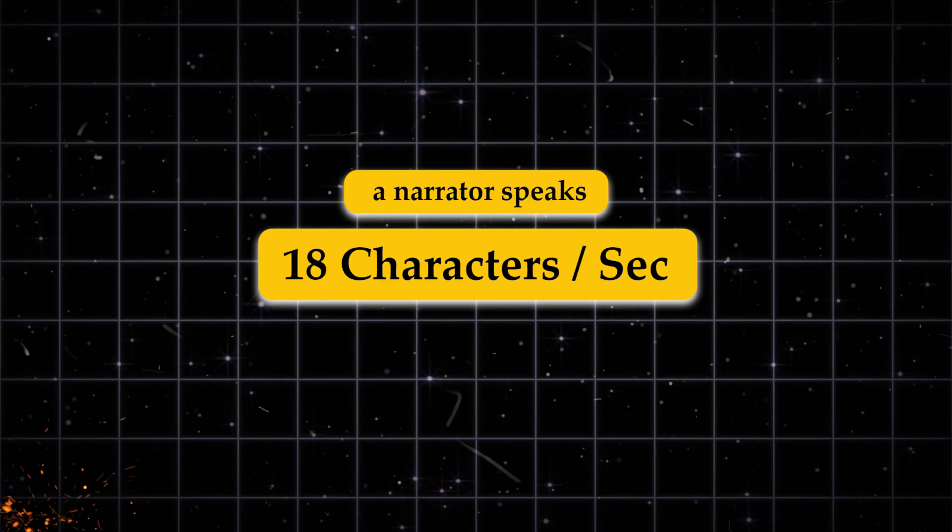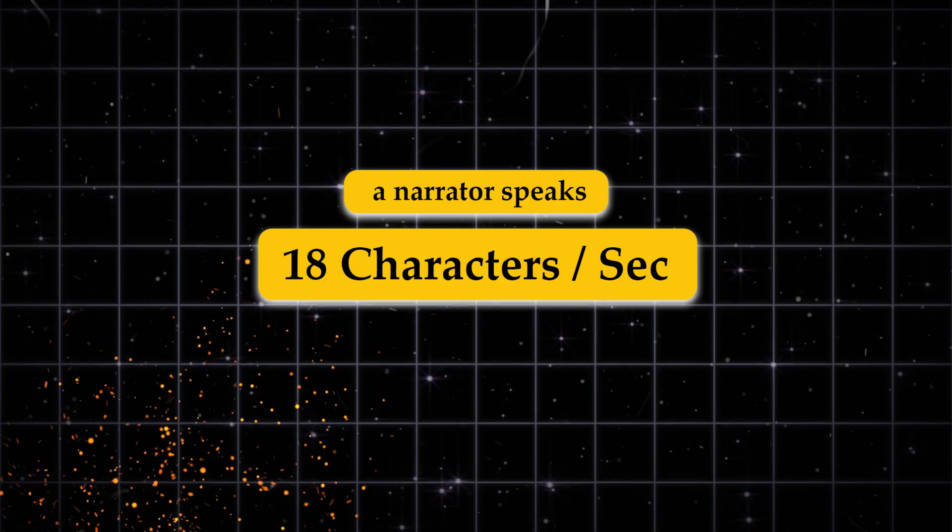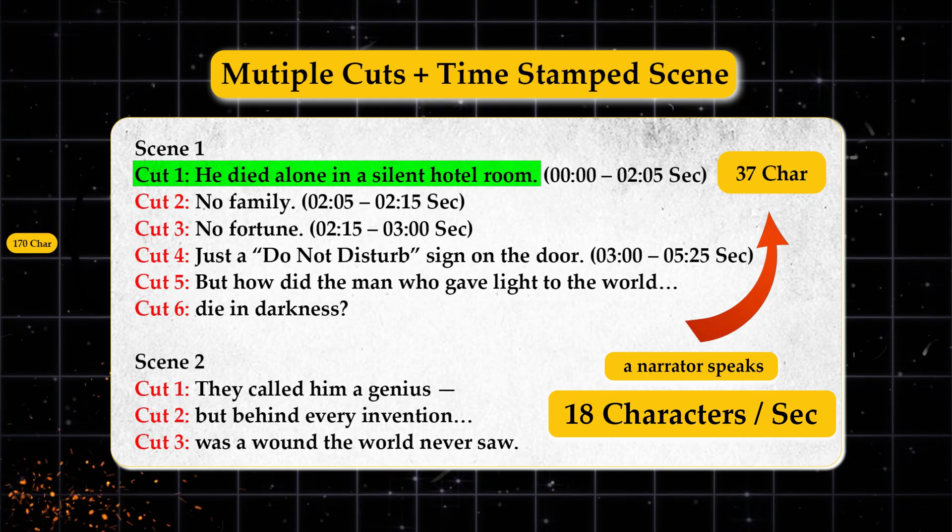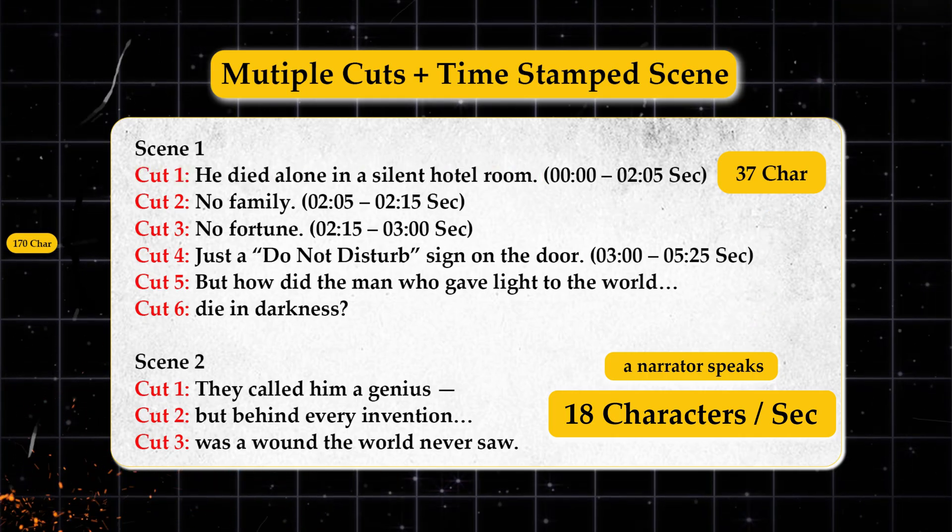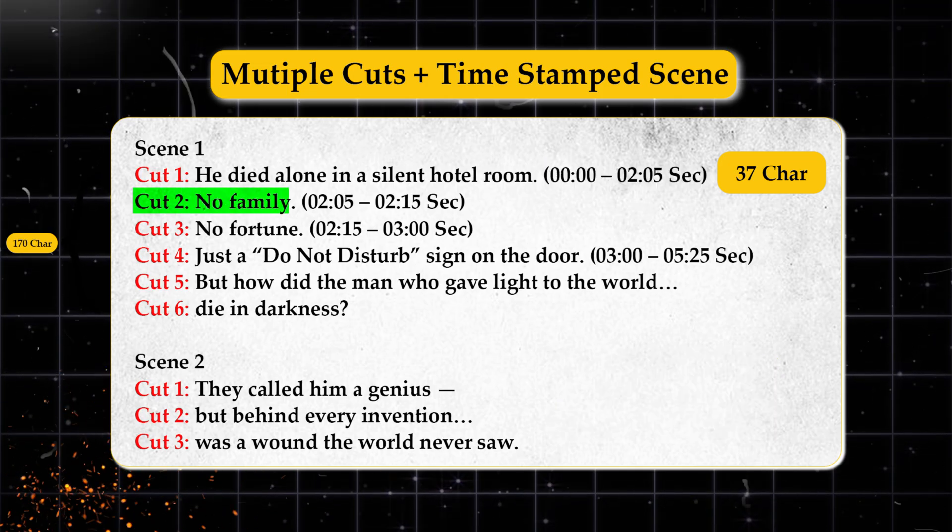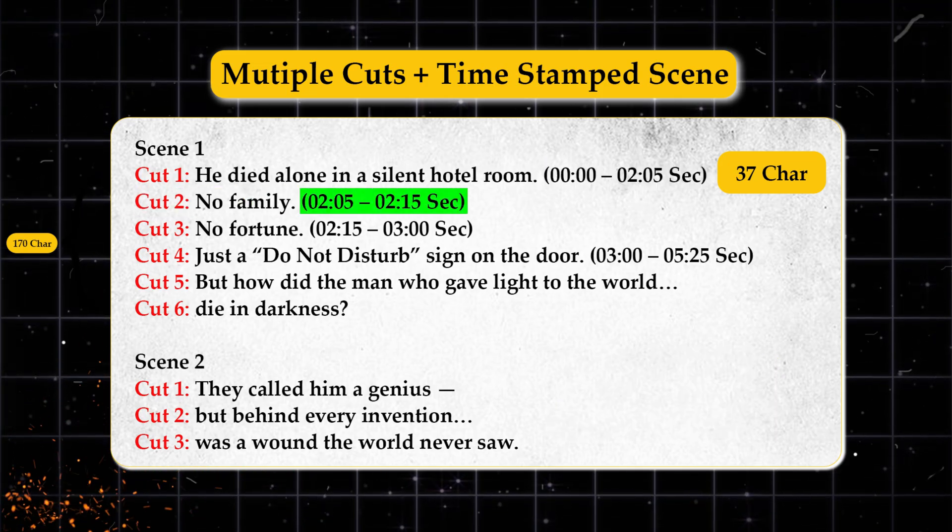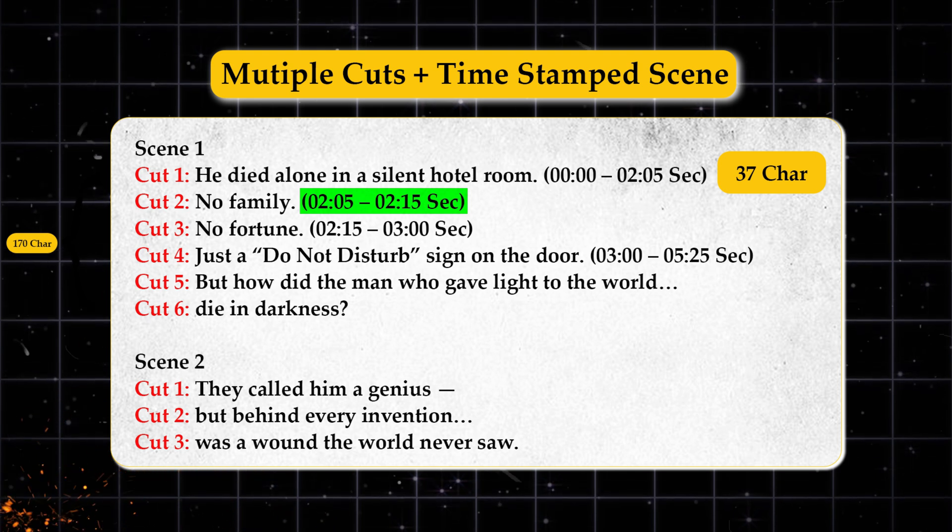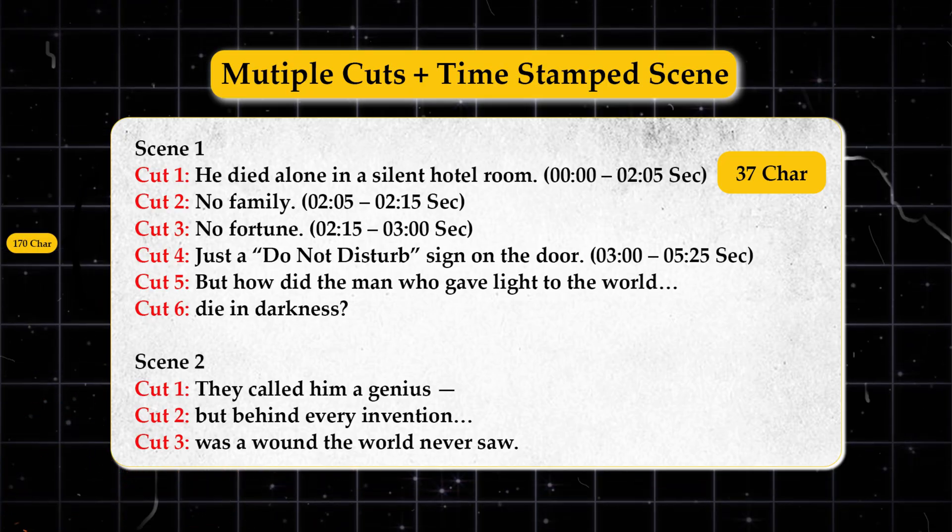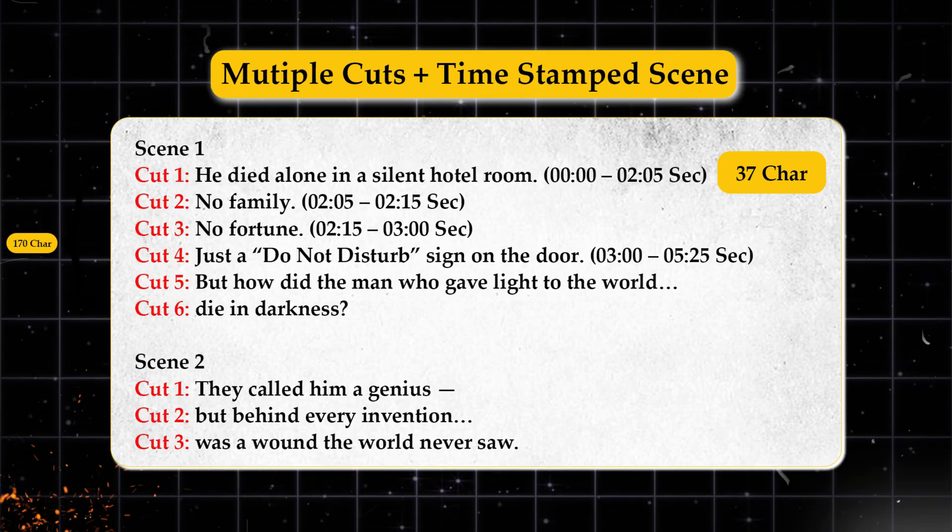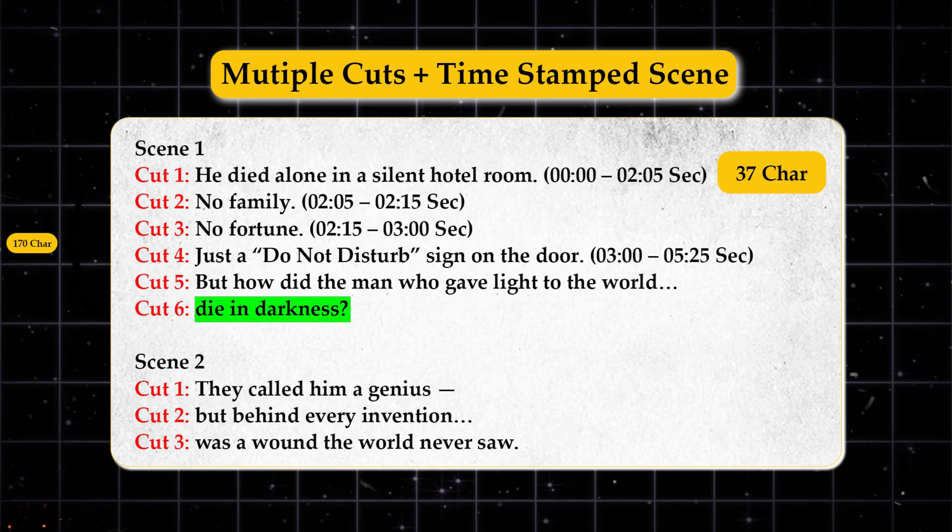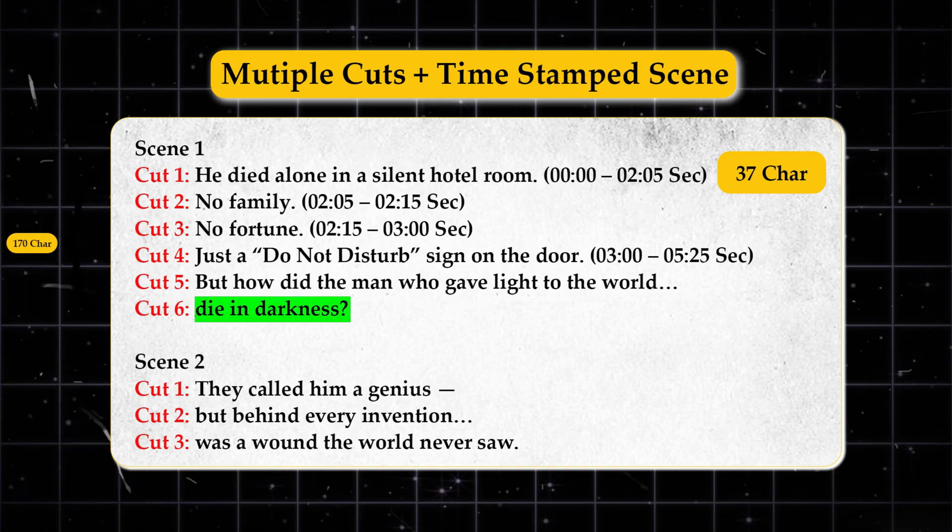But how do we calculate the right timing? Through simple math. On average, a narrator speaks 18 characters per second. Let's see this example. This first line has 37 characters. So its narration lasts about 2 seconds, mark it from 0 to 2 seconds. The next line has 10 characters, so it lasts 0.5 seconds, mark it from 2 to 2.15 seconds. And since each Sora 2 video lasts 10 seconds, that means each scene should have no more than 180 characters total. Which means, in our example, the first scene should end right here. At the line, die in darkness?